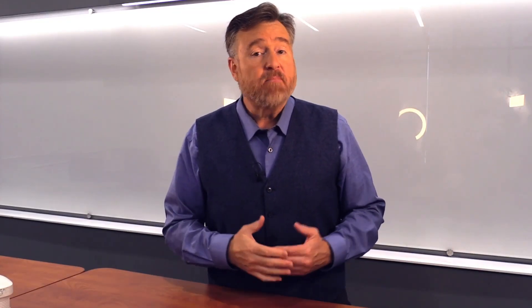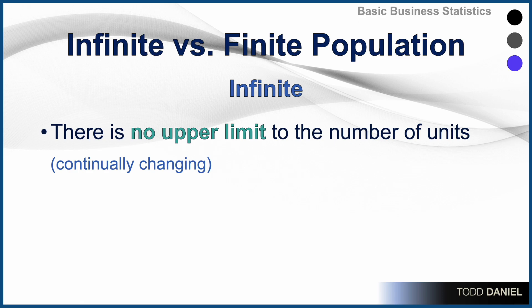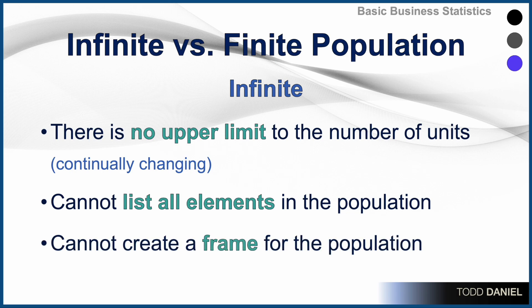We could begin by distinguishing between an infinite and a finite population. If a population is infinite, then there is no upper limit to the number of units in that population. Both the number of individuals in the population and the substance of that population are continually changing. Therefore, you cannot list all elements in the population, and even if you tried, that list would be different the next time you measured.